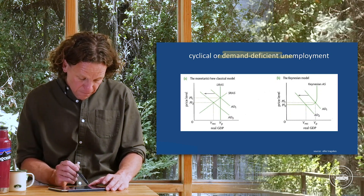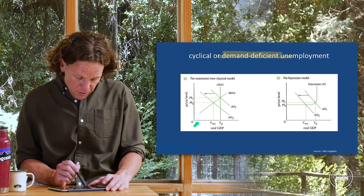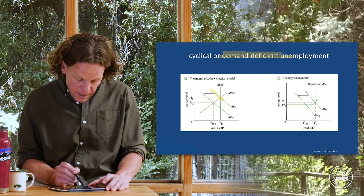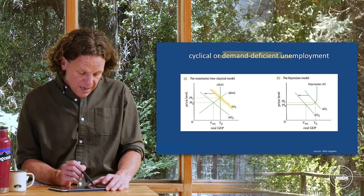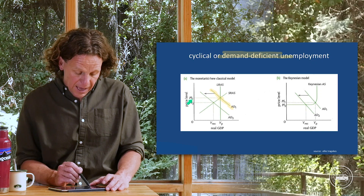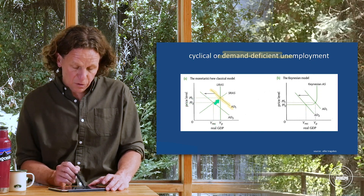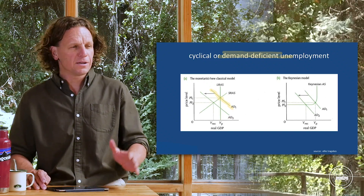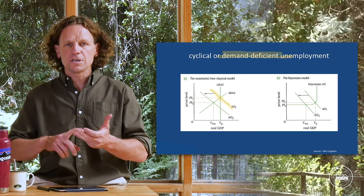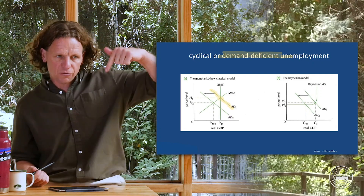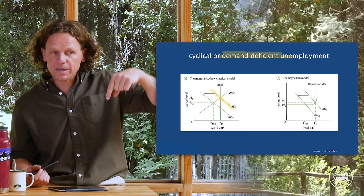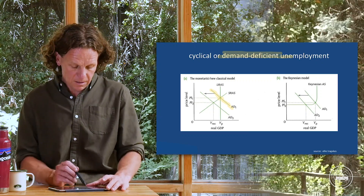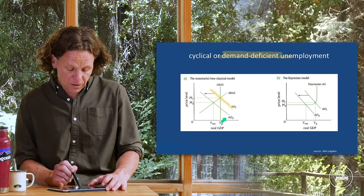In the neoclassical diagram, you have price level on the vertical axis and real GDP on the horizontal axis. Where this diagram begins is with an aggregate demand curve of AD1. The market is operating at price level 1, YP. Then what happens? There's a drop in aggregate demand — C plus I plus G plus X minus M. As a result of a drop in consumption, investment, government spending, or net exports, there is an inward shift of the aggregate demand curve to AD2.